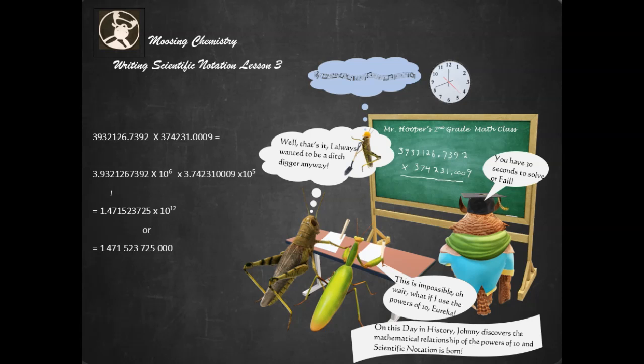Hi, welcome back to Moosing Chemistry. This is Writing Scientific Notation Lesson 3. What's the purpose of scientific notation? It's to take impossibly large numbers and make the multiplication process a lot easier.